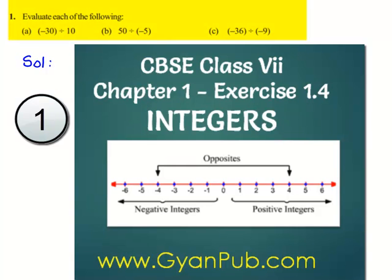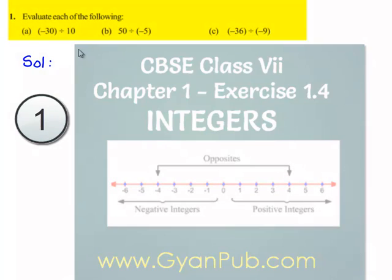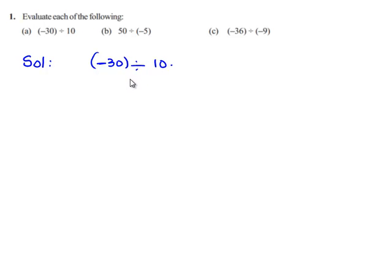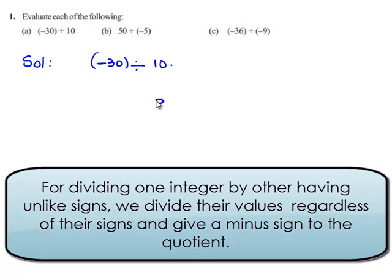We will see the first problem of the third exercise. The question given is, evaluate each of the following. In the first bit is negative 30 divided by 10. When we divide two integers, first we divide their values regardless of their signs. That is, 30 divided by 10 gives 3.